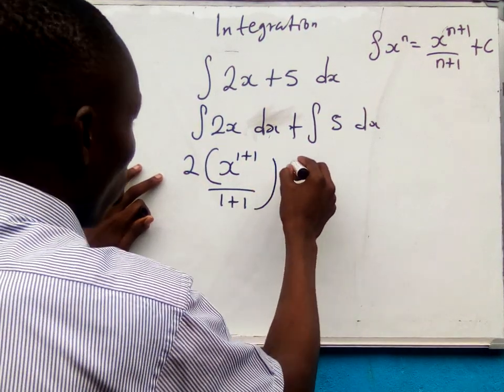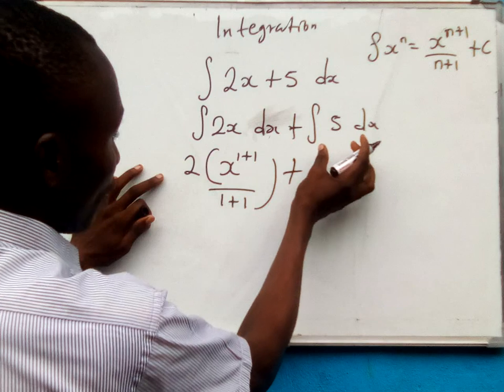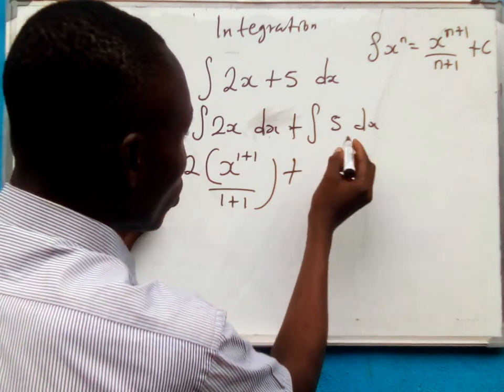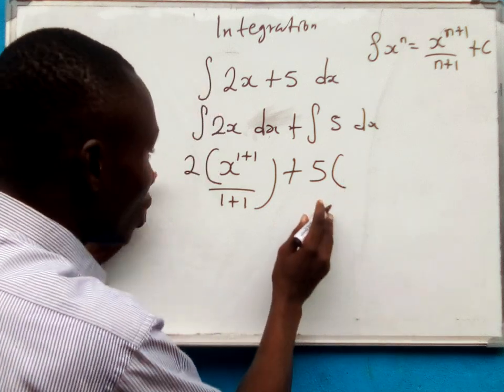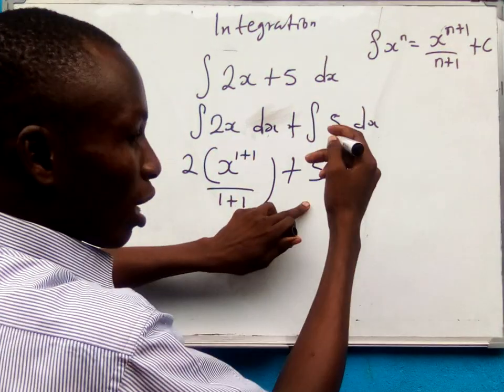Then plus. Now if I integrate 5 with respect to x, this will be the same as 5 times x. Because if it's actually a constant, we'll have x.